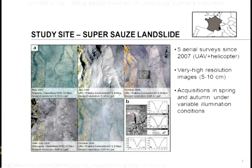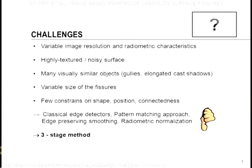So that's an overview of the imagery we got. Those are five aerial surveys recorded since 2007 with UAVs and other aerial platforms at different resolutions. So it's really a mix of different sensors, which makes it quite challenging. Because the different images, they have different resolution, different radiometric characteristics. The illumination conditions were different. The surface of the landslide, there's a lot of gravel and boulders lying around. So it's a highly textured, noisy surface, if you wish, with visually similar objects that can lead to confusion.